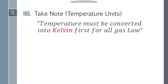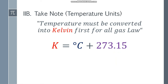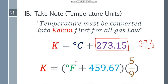We also have temperature units: Celsius, Kelvin, and Fahrenheit. When solving Gas Law, you have to convert the temperature to Kelvin first. If the problem requires converting back to Celsius, convert to Kelvin first, then convert to Celsius. If you have Celsius, just add 273.15. If it's Fahrenheit, add 459.67, then multiply by 5 over 9 to transform into Kelvin.